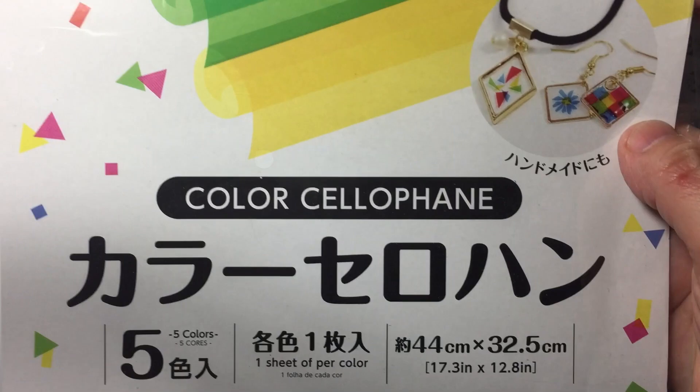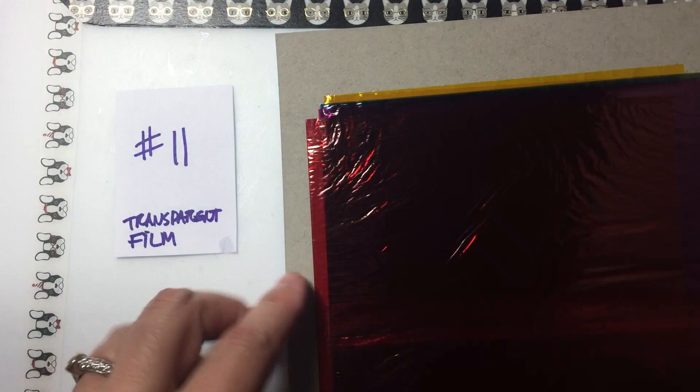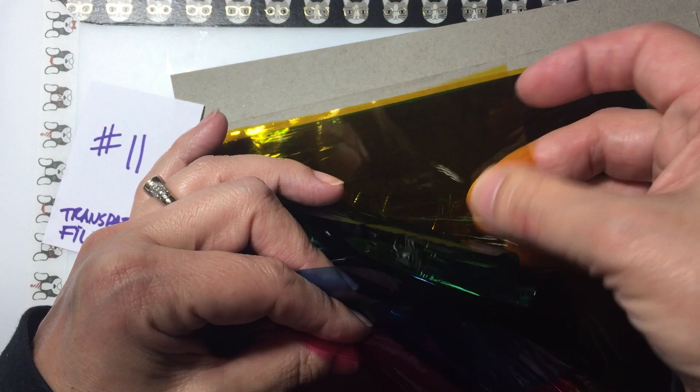The eleventh way to color resin is using cellophane or transparent films. I'm using a really inexpensive brand here from the 100 yen store. It's a cellophane. There's some transparent films that are a little bit thicker that are a little bit easier to cut. I punched this between two pieces of paper to get a clean cut but then I realized my circle is too big so I have to trim it down anyway.